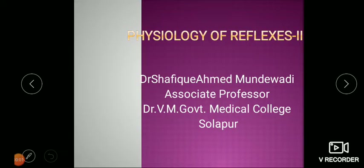Let's start the discussion of reflex part 2. In the previous lecture on physiology of reflexes, we learned the basics of stretch reflex, the path of the reflex arc, and how alpha motor neuron and gamma motor neuron stimulation leads to changes in the muscle spindle and how the muscle spindle functions in regulation of smooth and coordinated activity.